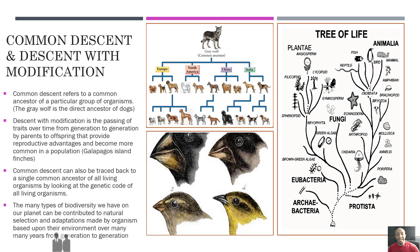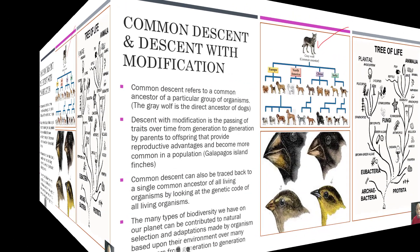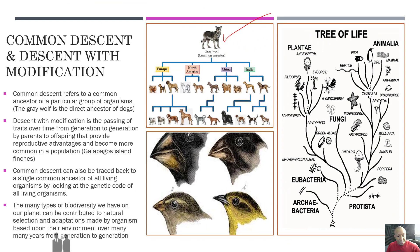Now let's take a look at common descent and descent with modification. Common descent refers to a common ancestor of a particular group of organisms. For example, the gray wolf is the direct ancestor of dogs. All the different types of dogs found in different countries and parts of the world originally descended from the gray wolf, their most common ancestor. Descent with modification is the passing of traits over time from generation to generation by parents to offspring that provide reproductive advantages and become more common in a population.